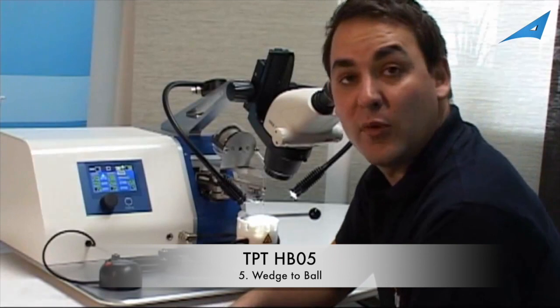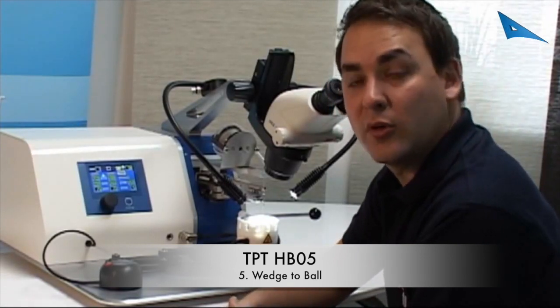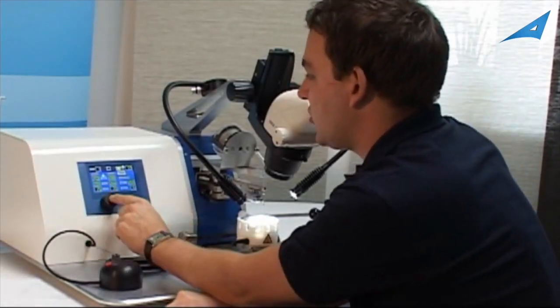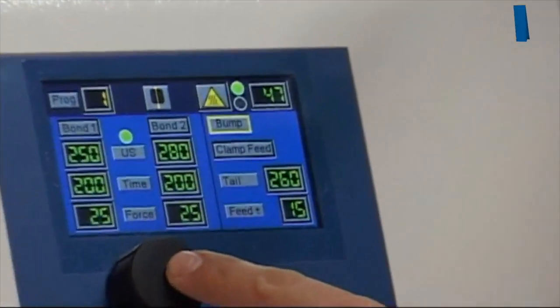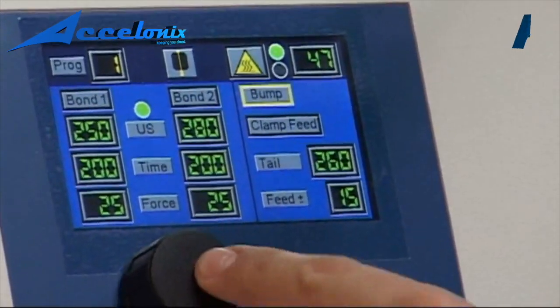If your machine is equipped with wedge and ball bonding mode, then you can easily change it by pressing this button. So you have wedge, ball, and bump bonding mode.